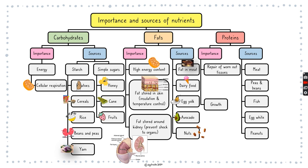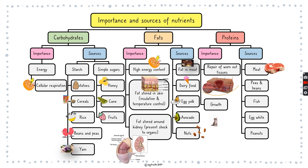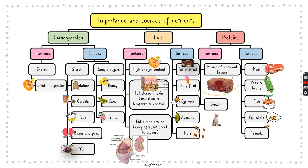Protein is important for repair of worn-out tissues — for example, if you have a cut, or even your red blood cells and white blood cells are tired, protein is important to make those cells as well. It is also important for growth. Sources of protein: meat, beans and peas, fish, egg whites, and peanuts.